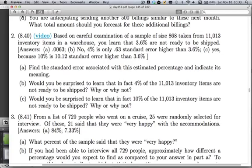Let's look at the second problem now. Based on a careful examination of a sample of size 868 taken from a very large warehouse, you learn that 3.6% are not ready to be shipped. Let's go take a few notes on what we've been told here. The 11,013 number is the population size, so that's a big N. We just learned that 3.6% were not ready to be shipped, so that's a little p, 0.036.